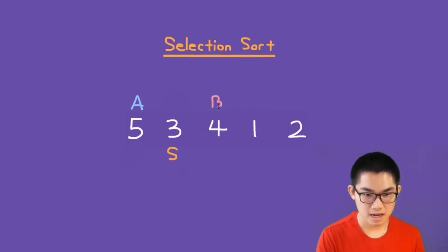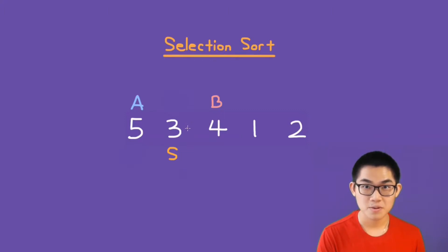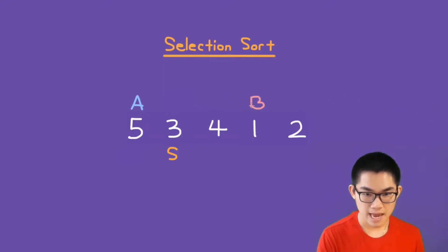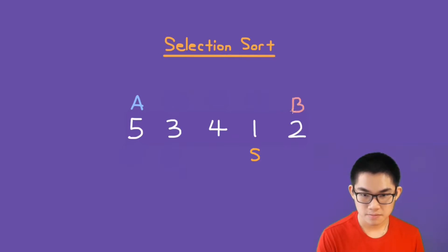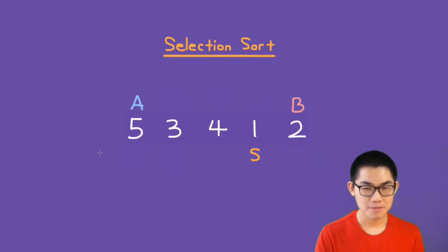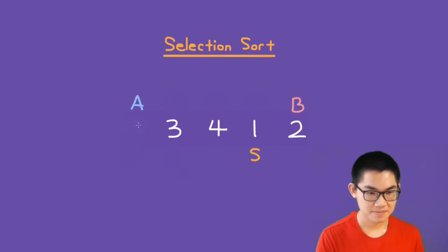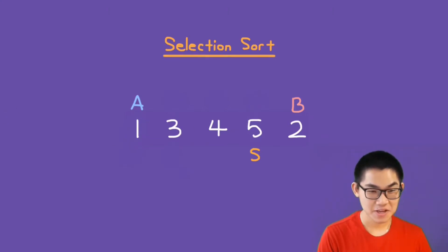B moves on to the next element and says, is 4 smaller than 3? The answer is no, so B moves on. Then B says, is 1 smaller than 3? It is indeed smaller, so B assumes that 1 is now the smallest number. B goes on to the last element and says, is 2 smaller than 1? The answer is no. B is at the end of the array, and we will swap number 5 and number 1. Once we swap them, 1 is now in its correct position.